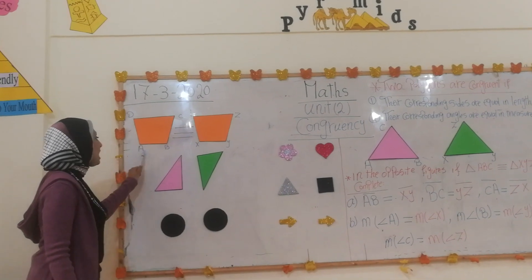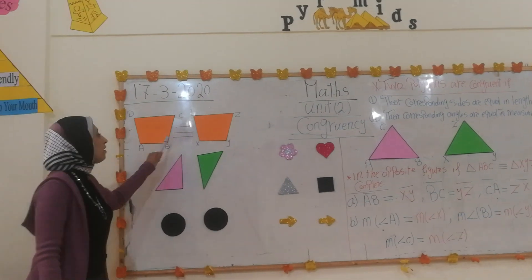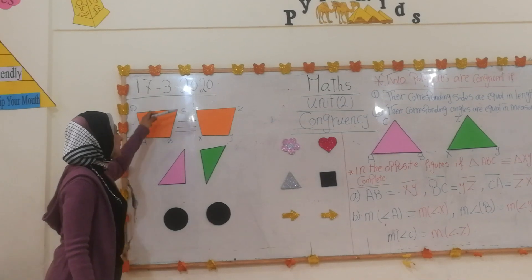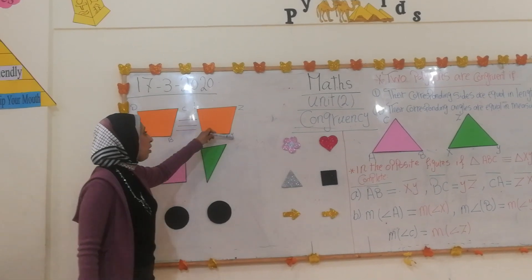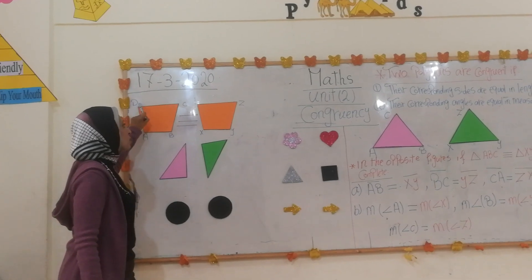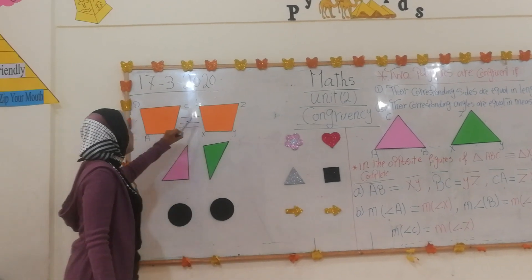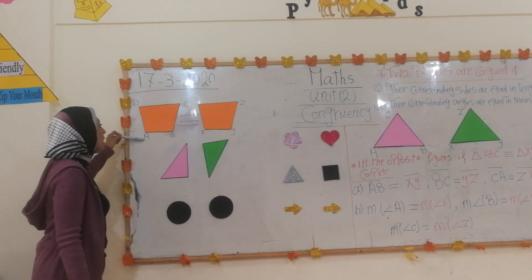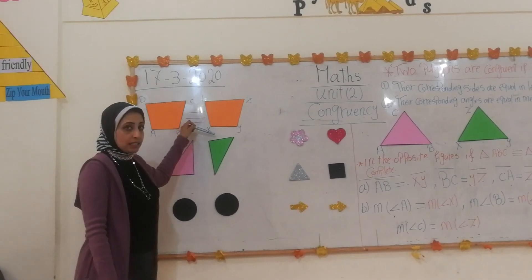The length of AB equals the length of XY, and the length of BC equals the length of YZ, and the length of CD equals the length of ZL, and the length of DA equals the length of LX.